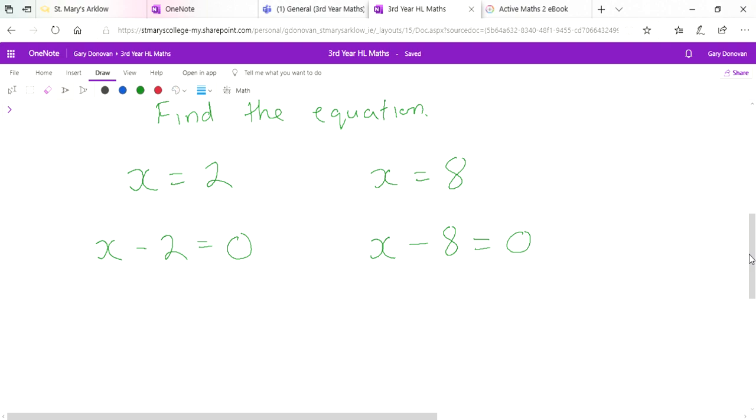Now we've worked backwards here. Initially we had our roots, and now what we actually have is we have two factors. We have x minus 2 and x minus 8, and these are our factors.